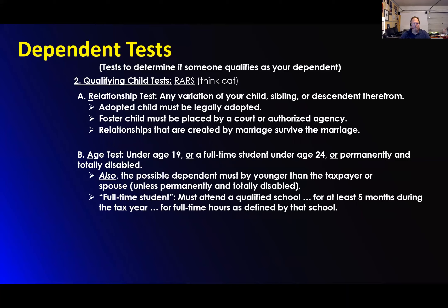It must be an adopted child, a foster child, or a relationship that is created by marriage — that does survive the marriage, meaning a stepchild. So the relationship test: it's got to be your child, a sibling, or one of their children. So in other words, your niece, nephew, grandchild, or your child. Those are ones that would qualify. We're talking about your child or grandchild, your sibling, or your brother or sister — or their children, which would be your niece or nephew.